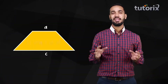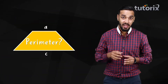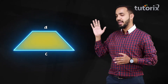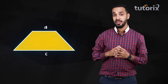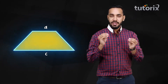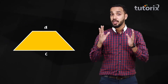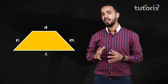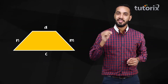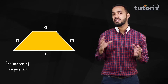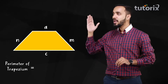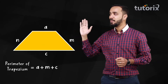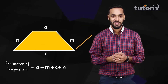Now let's find the perimeter. Like any other shape, perimeter is just the length of the boundary. So if we take the non-parallel sides as M and N, then the perimeter of a trapezium is equal to A + M + C + N.